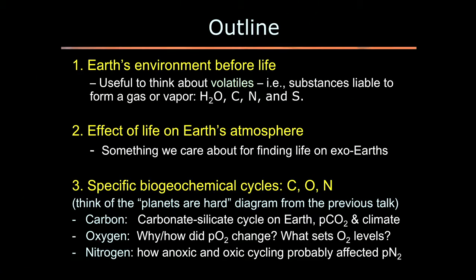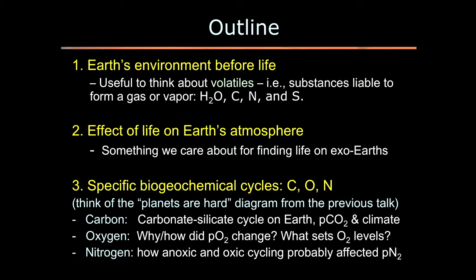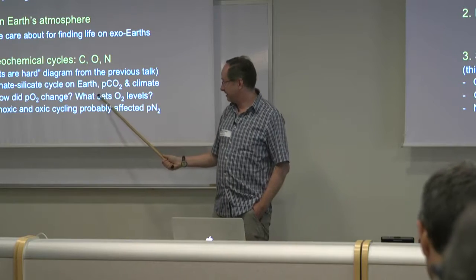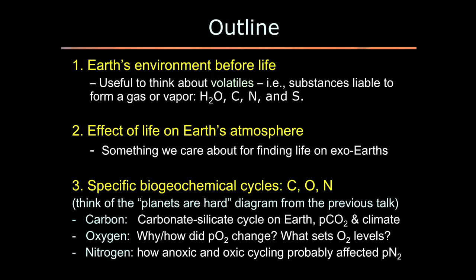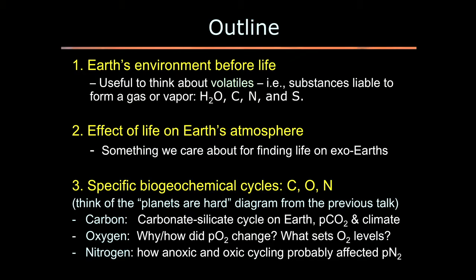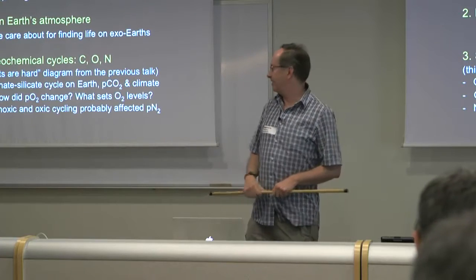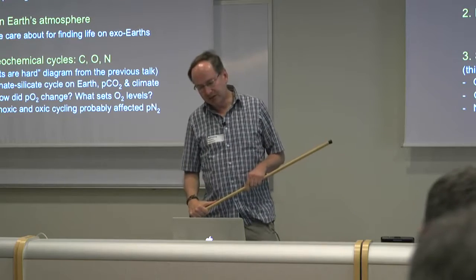Then think about: we have a prebiotic atmosphere, but then life appears — how does it change the atmosphere? That's something we care about for finding life on exoplanets through biosignatures — gases or other signatures of life. That comes from biogeochemistry, which is a connection of the biosphere to the geology and chemistry of an Earth-like planet. When we think of life, it's made from the so-called CHNOPS elements — carbon, hydrogen, nitrogen, oxygen, phosphorus, sulfur — and very importantly, carbon, oxygen, and nitrogen. I'll discuss those cycles.